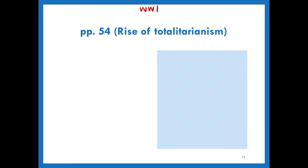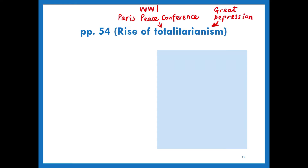We have mentioned the end of the First World War, and there was a conference called the Paris Peace Conference. Some countries were not happy with the ending, and that's why they wanted to change the current situation. There was also the Great Depression — most countries suffered a lot, and people believed that a dictator could help change the situation. These two are the major causes of the rise of totalitarianism.